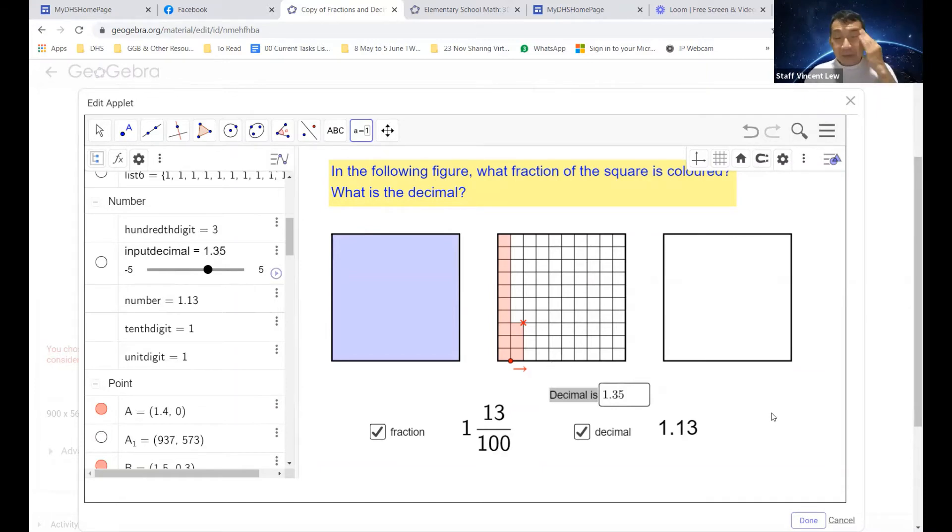Okay, what we're going to do now is we are going to close. I'm going to close this. And we are going to create a text box which will give us a feedback to see whether the input decimal is equal to the decimal answer.